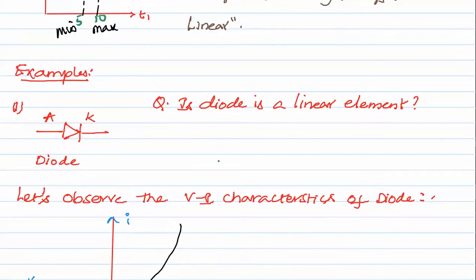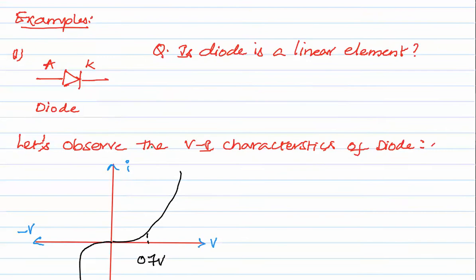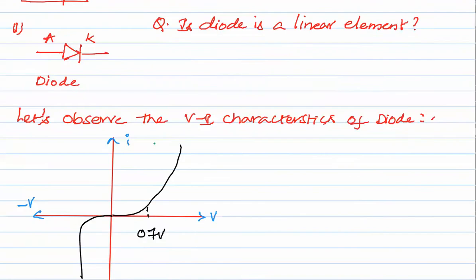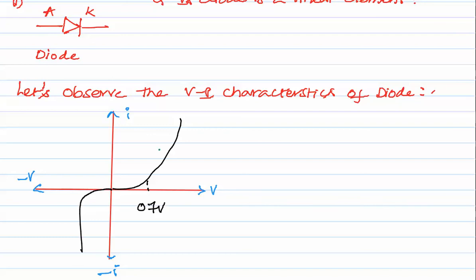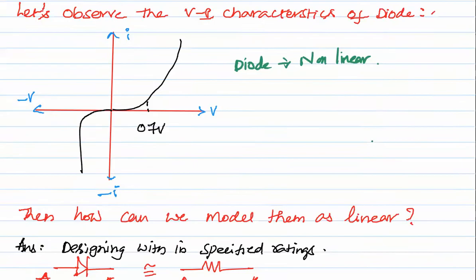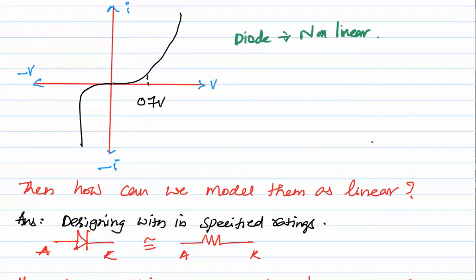The best example I have is a diode. My question is: is a diode a linear element? By observing the V-I characteristics, we can say that a diode is definitely a non-linear system. But how can we make the diode linear?